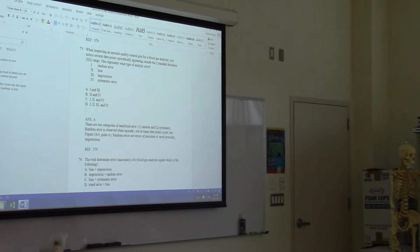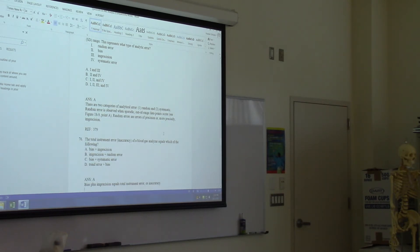What about this one? Total instrument error or inaccuracy of a blood gas analyzer equals which of the following? Oh no, that's not on the test either. This is random and systematic.